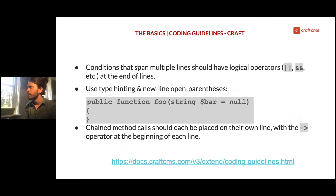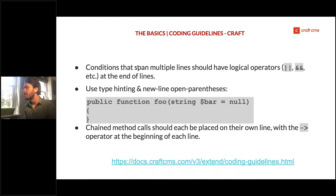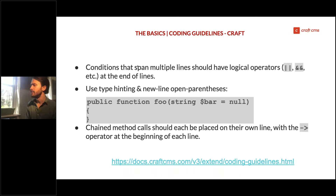Let's start with the basics, beginning with Craft alphabetically. Conditions that span multiple lines in Craft should have logical operators at the end of lines, as opposed to the beginning. Use type hinting and newline open parentheses — Craft seems to care about these newline open parentheses, others don't. Chain method calls should each be placed on their own line with the arrow operator at the beginning of each line.